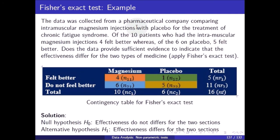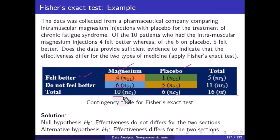Second example: data was collected from a pharmaceutical company comparing intramuscular magnesium injections with placebo for treatment of chronic fatigue syndrome. Of 10 patients who had the intramuscular magnesium injection, 4 felt better; of 6 on placebo, 1 felt better. Does the data provide sufficient evidence that effectiveness differs for the two types of medicine? Magnesium: 4 feel better, 6 do not (total 10). Placebo: 1 feels better, 5 do not (total 6). Column totals: 5 and 11; grand total nt equals 16.